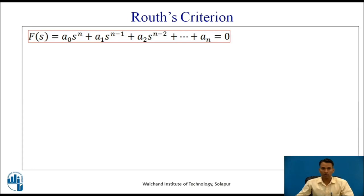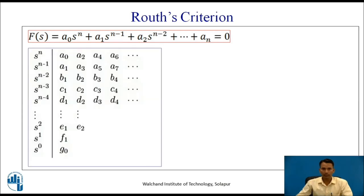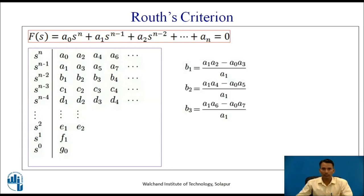For the given equation, we can write the Routh table — also called the Routh array — as: for s raised to n, the coefficients are a0, a2, a4, a6; and for s raised to n-1, the coefficients are a1, a3, a5, a7. Then b1, b2, b3 are calculated accordingly, and the next row s raised to n-3 gives c1, c2, c3.